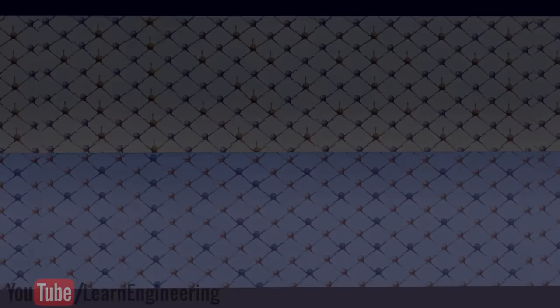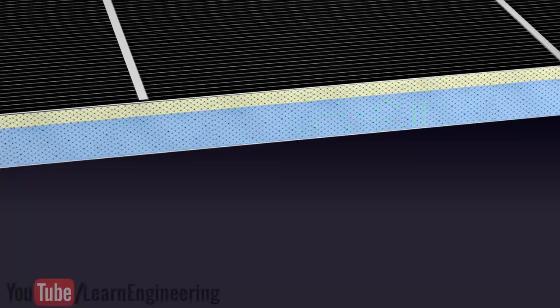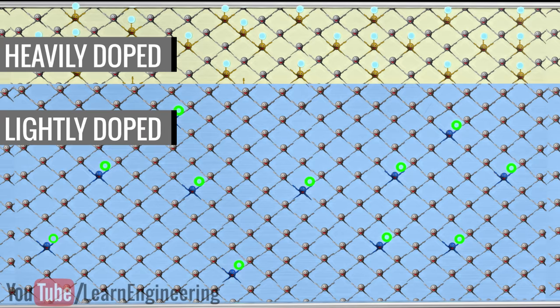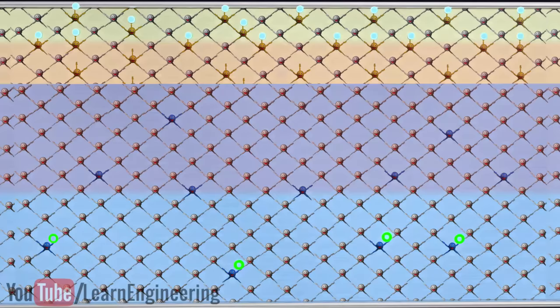In a practical solar cell, you can see that the top N layer is very thin and heavily doped, whereas the P layer is thick and lightly doped. This is to increase the performance of the cell. Just observe the depletion region formation here.